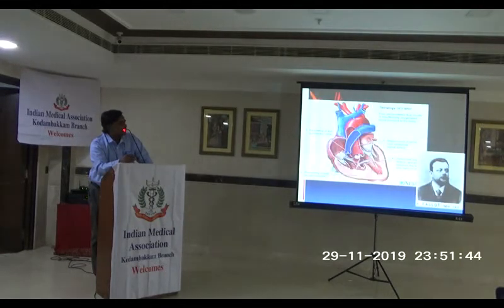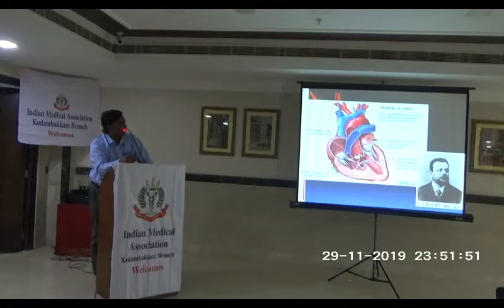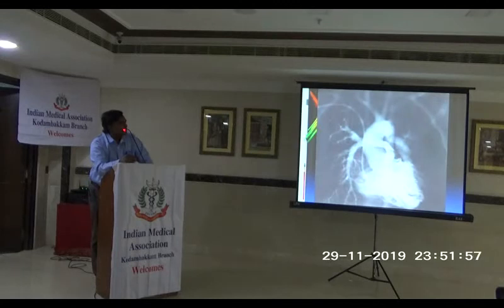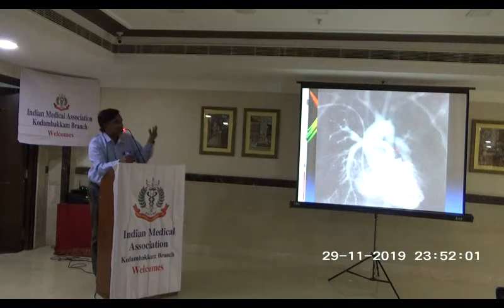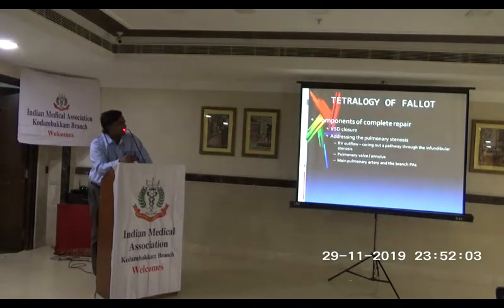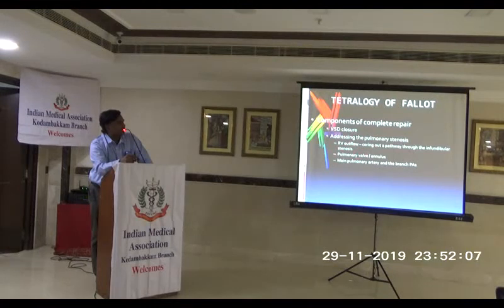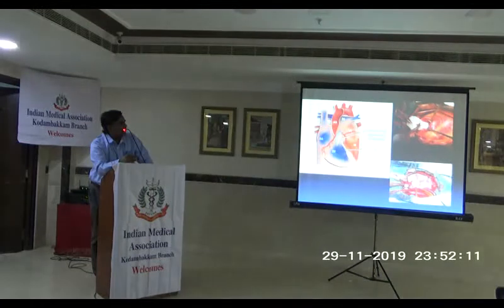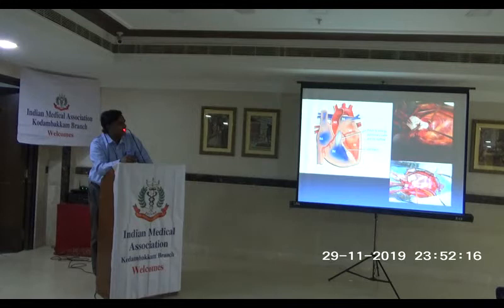Coming to the commonest cyanotic lesion — tetralogy of Fallot. We have right ventricular hypertrophy, obstruction to the pulmonary outflow tract, overriding aorta, and a large VSD. The right pulmonary artery and the entire RV outflow tract can be small. What we do is close the VSD and open up the RV outflow tract to ensure the pulmonary pathway is adequate. We reconstruct the pulmonary valve.